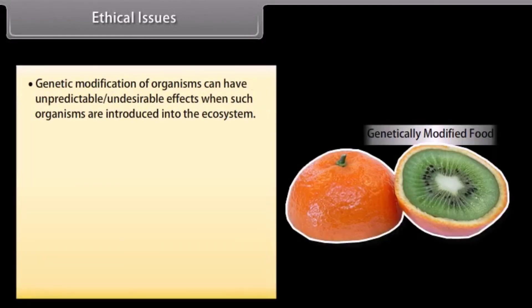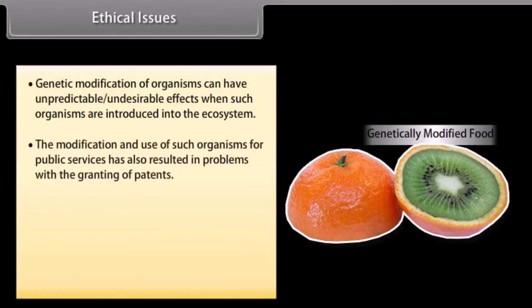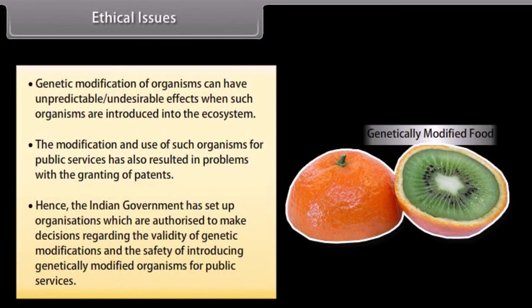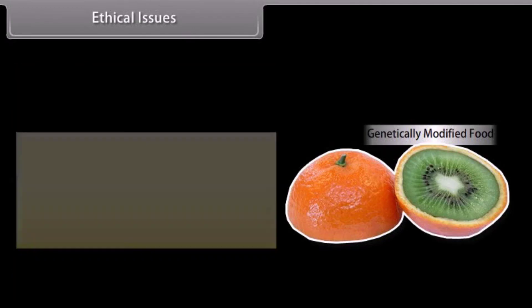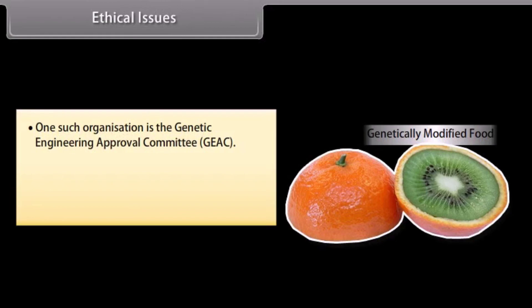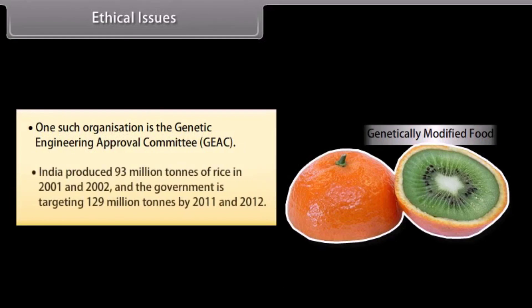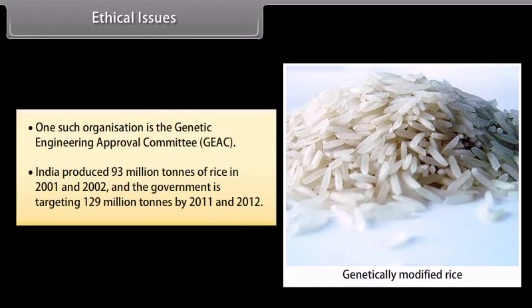Ethical issues. Genetic modification of organisms can have unpredictable, undesirable effects when such organisms are introduced into the ecosystem. The modification and use of such organisms has also resulted in problems with the granting of patents. Hence, the Indian government has set up organizations authorized to make decisions regarding the validity of genetic modifications and the safety of introducing GMOs for public services. One such organization is the Genetic Engineering Approval Committee, GEAC. India produced 93 million tons of rice in 2001-2002 and the government was targeting 129 million tons by 2011-2012.